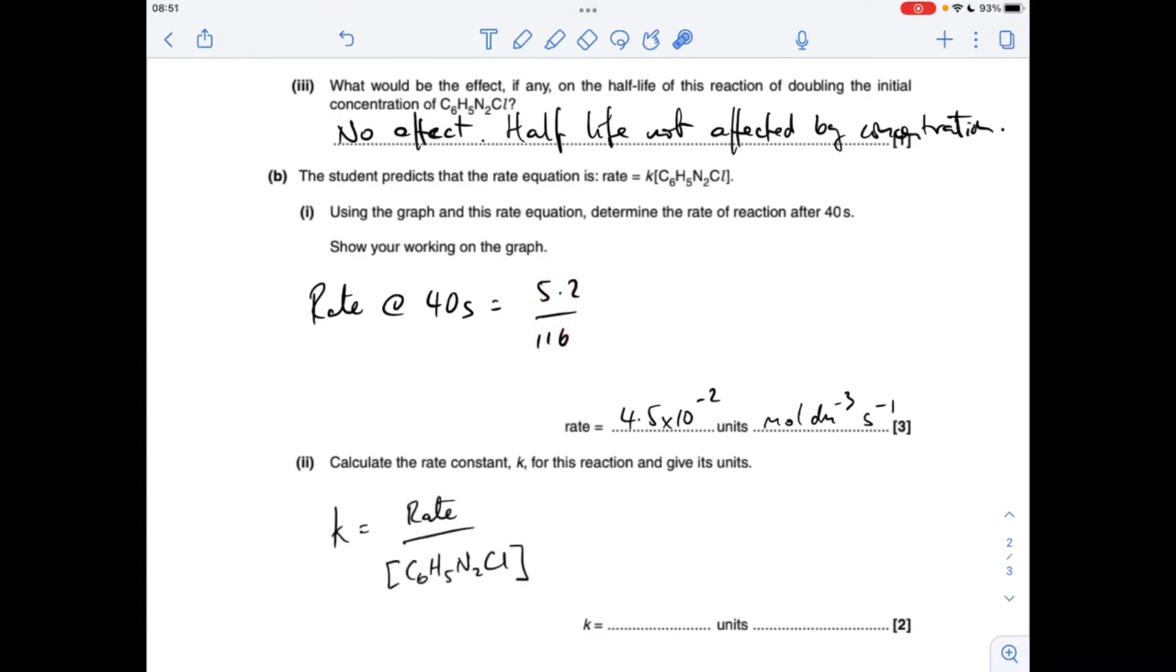So to calculate the value for k, I've rearranged the rate equation and I'm going to use the rate I've just calculated at 40 seconds. And the concentration at 40 seconds comes out at 3.4 moles per decimetre cubed.